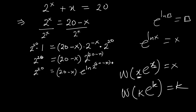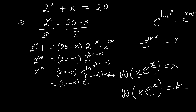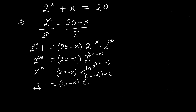Using the rule e raised to (x · ln(box)) equals box raised to x, we can adjust this expression. So we have (20 minus X) times e raised to (20 minus X) times ln(2).